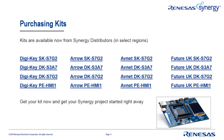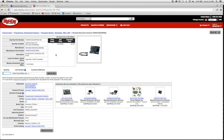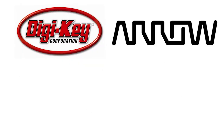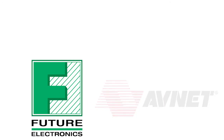Once you've selected the right kit, you'll want to get one. You can purchase any of these kits from your favorite distributor. Just enter the kit name — SKS7G2, for example — in the distributor search window, and you can find price and availability information. Just place your order with DigiKey, Arrow, Avnet, or Future, and you can begin discovering for yourself the compelling advantages the Synergy platform provides.